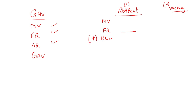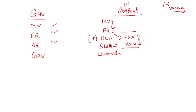RLV stands for Reasonable Let Out Value. Municipal Value and Fair Rent — whichever is higher becomes the RLV. After that, write the Standard Rent value. From RLV and Standard Rent, whichever is the lower value becomes your next figure. Then write Actual Rent again.